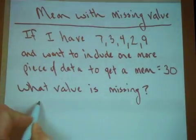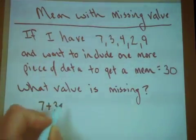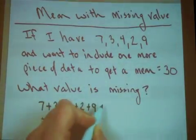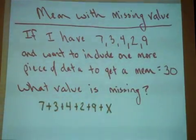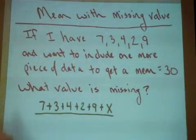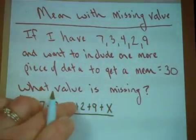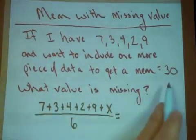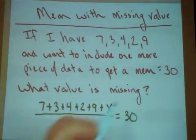So I need to do 7 plus 3 plus 4 plus 2 plus 9 plus some unknown value, I'm going to call it x. All of that will be divided by, well now I have 1, 2, 3, 4, 5, 6 pieces of data, and I said I want that mean to be equal to 30.